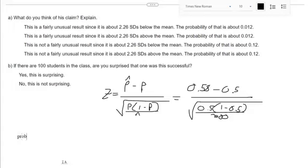And if you have 100 students, you expect probability times the number of students. That's an expected value that we saw earlier. You expect 1.2 students to have this result.